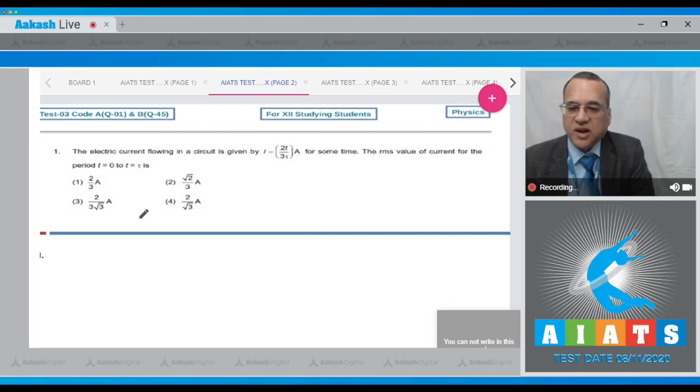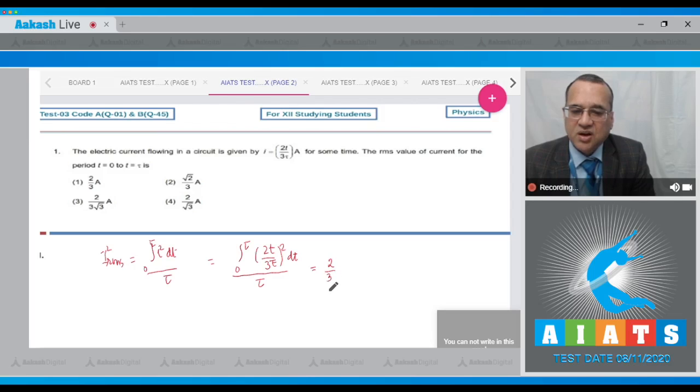Now dear students, to find the RMS value we should remember the formula. Your formula is I RMS squared equals i squared dt, limits of the time, divided by the total time. Now the value of i is given, so we will fill up the values 0 to tau, and i equals 2t upon 3 tau, squared into dt, whole divided by tau. We will take the common outside, that is equal to 2 by 3 tau squared into 1 by tau, and remaining is t squared into dt with the limit from 0 to tau.